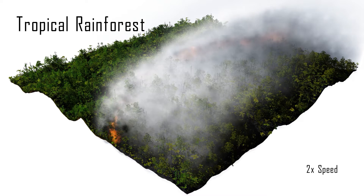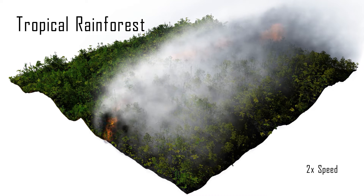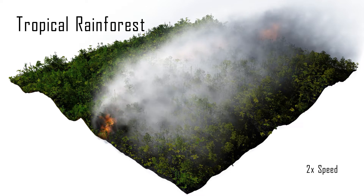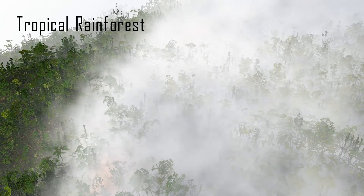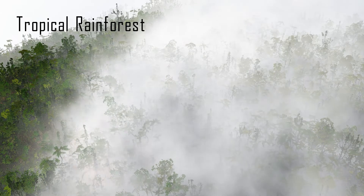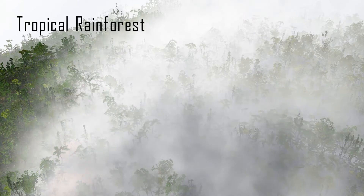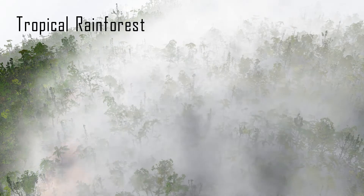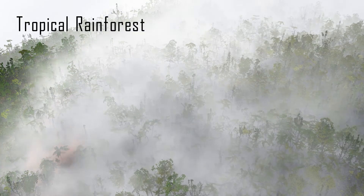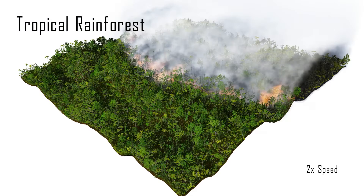When a tropical rainforest burns, it releases a huge amount of vapor into the air due to the increased amount of biomass. In this case, the taller trees of the wetter climate do not catch on fire, with the fire line progressing close to the ground.